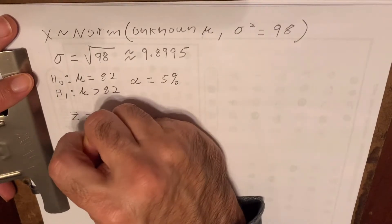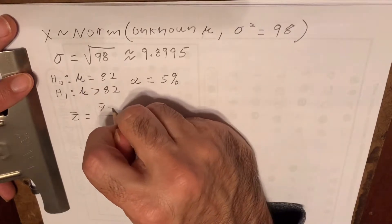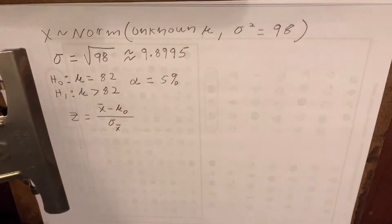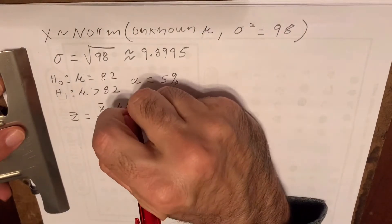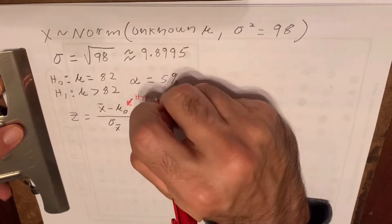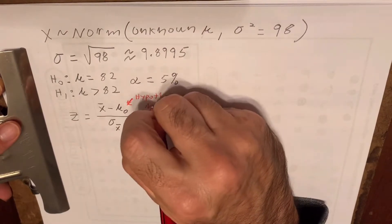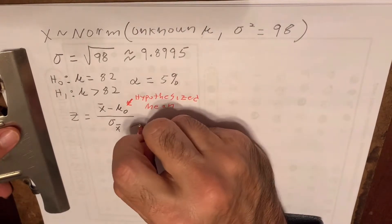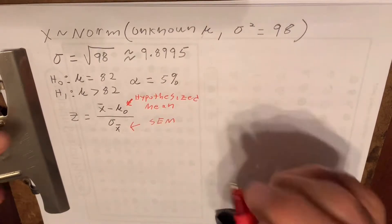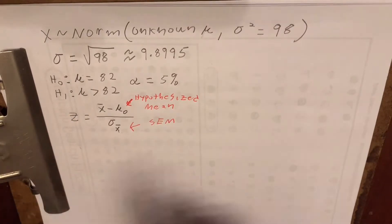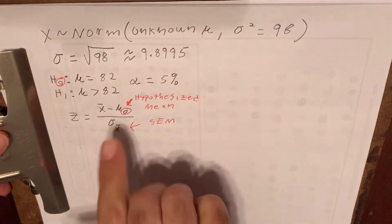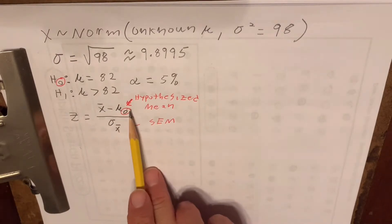Part A asks us to determine the Z-score and perform the test. We know that Z equals X-bar minus mu-naught over sigma sub-X-bar, where mu-naught is called the hypothesized mean and sigma sub-X-bar is called the standard error of the mean.